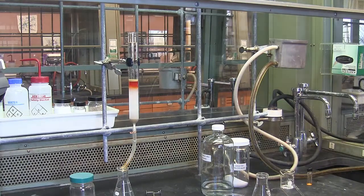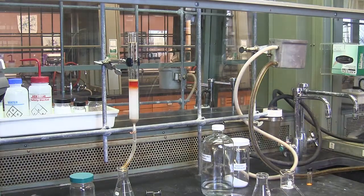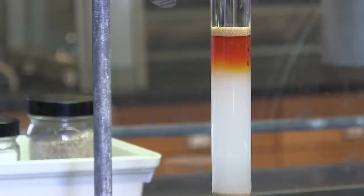I can already see separation in the column. Zooming in on the top of the column, you can see that a yellow band is moving more quickly through the column than the other components. Looks like there's some orange behind the yellow and some deep red at the top of the column.